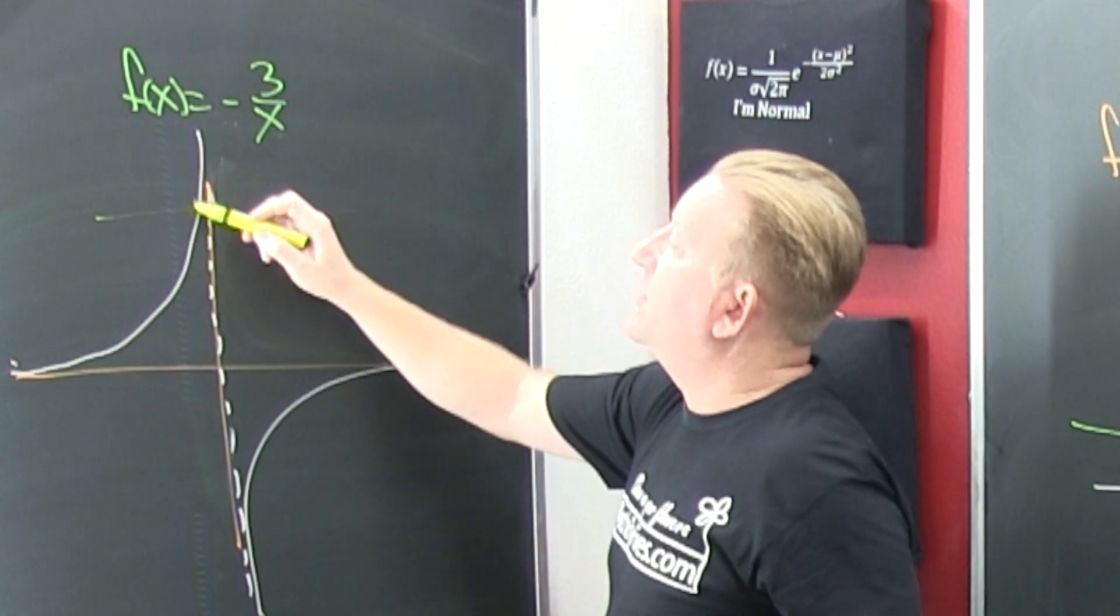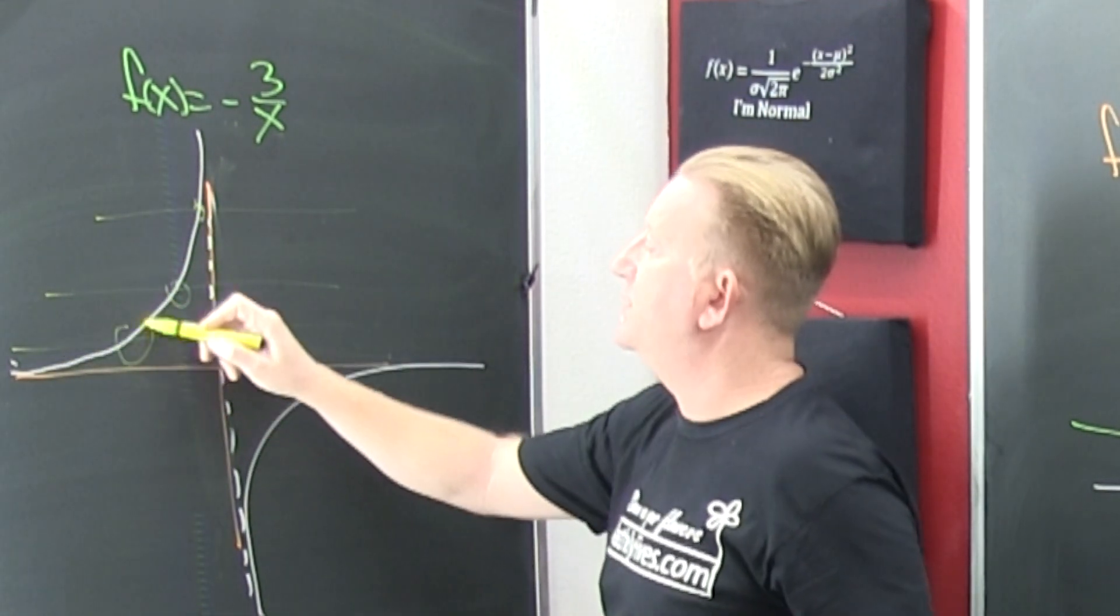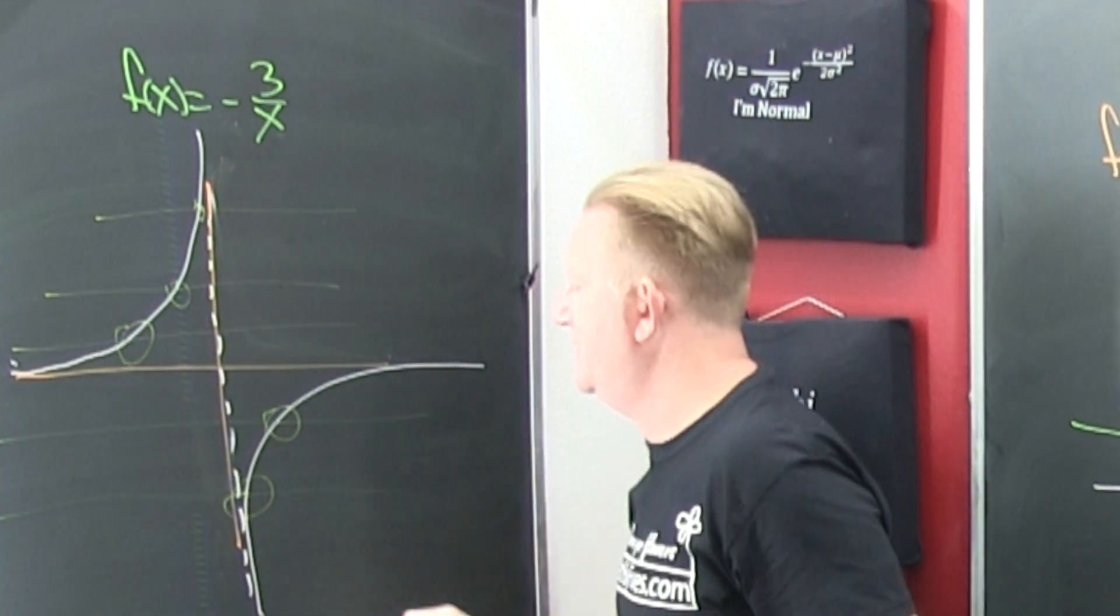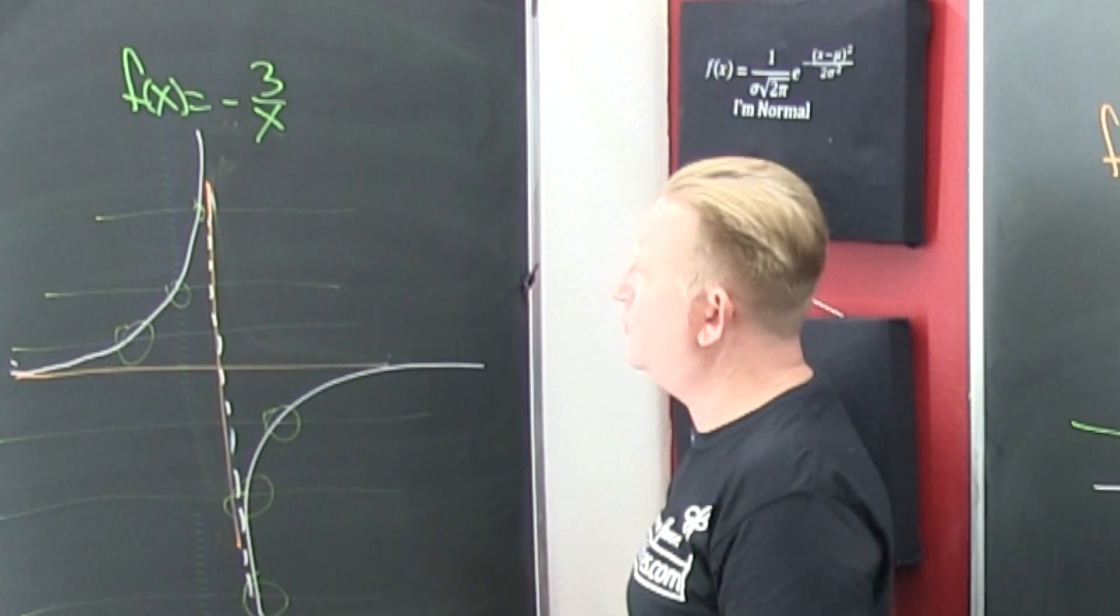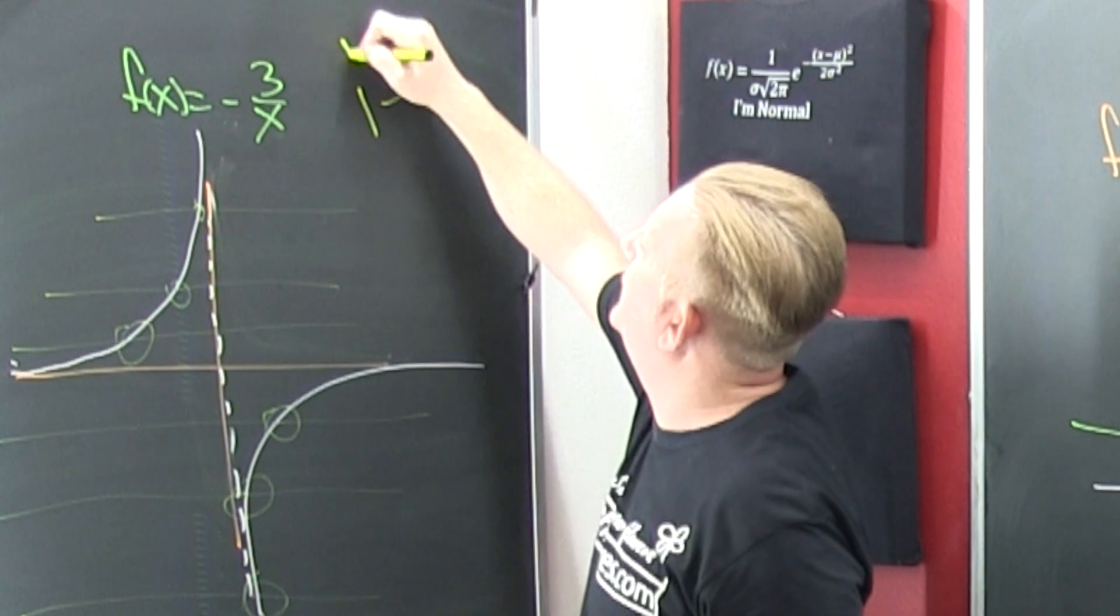Now using the horizontal line test, look - it only crosses at one spot. Look at all these, they cross at one spot. So this one is one-to-one.